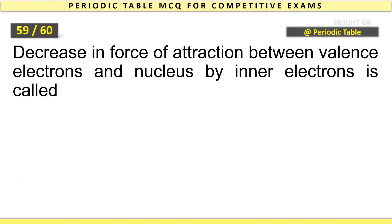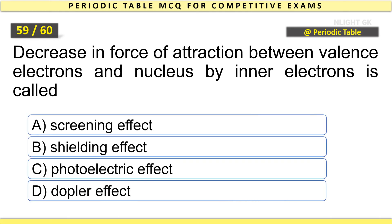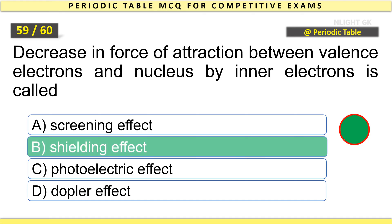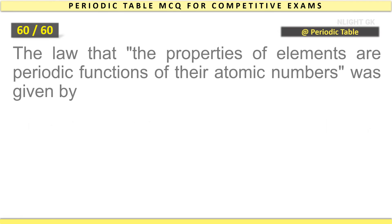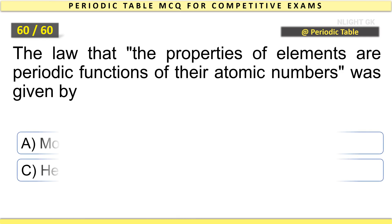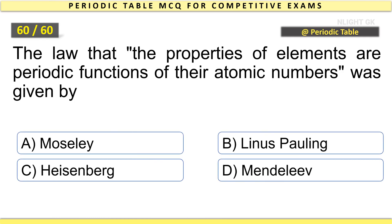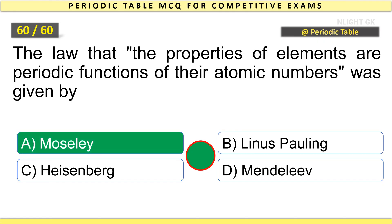Decrease in force of attraction between valence electrons and nucleus by inner electrons is called shielding effect. The law that the properties of elements are periodic functions of their atomic numbers was given by Moseley.